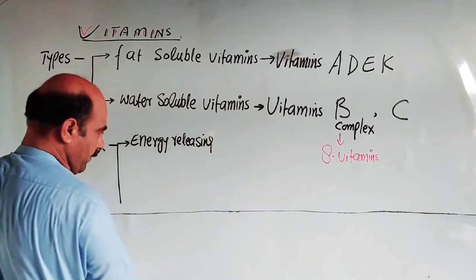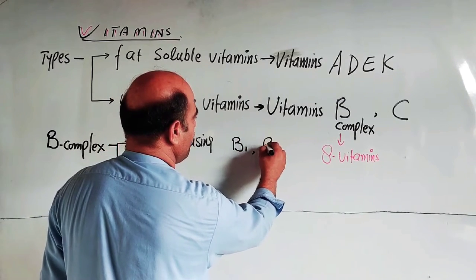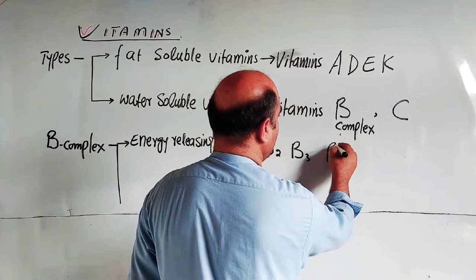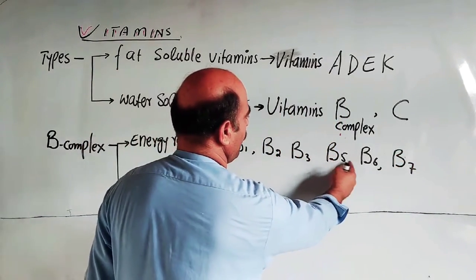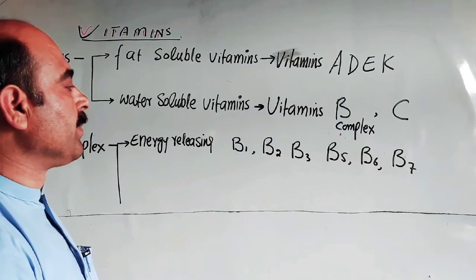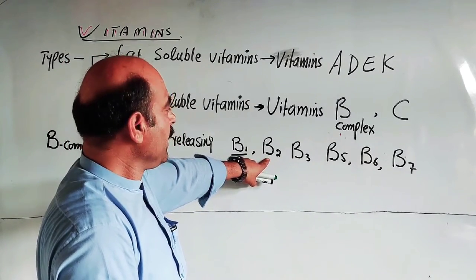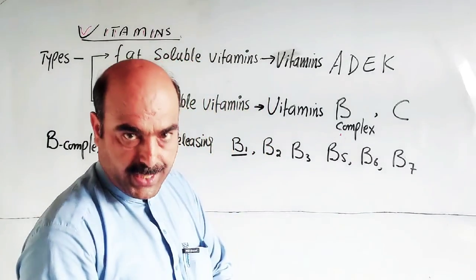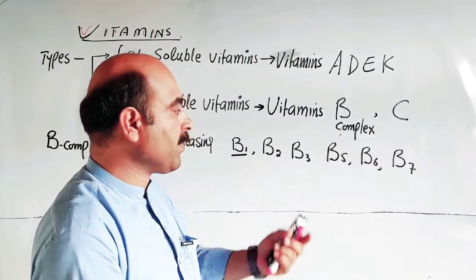The energy-releasing vitamins in B complex are B1 (Thiamine), B2 (Riboflavin), B3 (Niacin), B5, B6 (Pyridoxine), and B7 (Biotin). These six vitamins are categorized as energy-releasing vitamins.